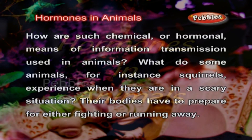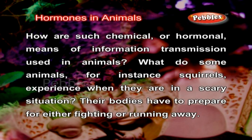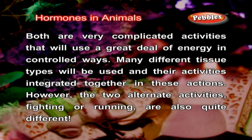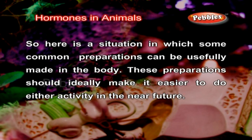Hormones in animals. How are chemical or hormonal means of information transmission used in animals? What do some animals, for instance squirrels, experience when they are in a scary situation? Their bodies have to prepare for either fighting or running away. Both are very complicated activities that will use a great deal of energy in controlled ways. Many different tissue types will be used and their activities integrated together in these actions. However, the two alternate activities, fighting or running, are also quite different. So, here is a situation in which some common preparations can be usefully made in the body, and these preparations should ideally make it easier to do either activity in the near future.